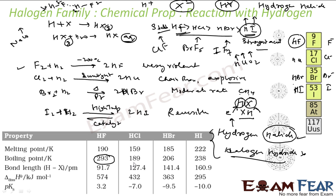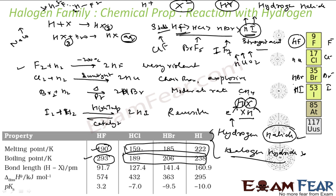Regarding boiling point: HF has a very high boiling point. If you ignore HF, the boiling point increases as we go down the group — from HCl to HBr to HI. The same trend applies to melting point. This is because the size of the molecule increases and the Van der Waals forces increase.